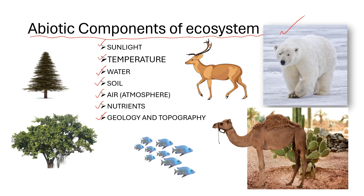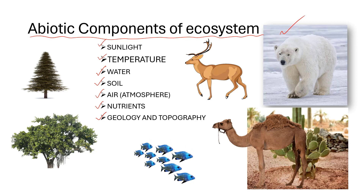The interactions and interdependencies between biotic and abiotic components create the intricate and balanced systems that we call ecosystems. Any changes or disturbances to one component can have cascading effects on the entire ecosystem.